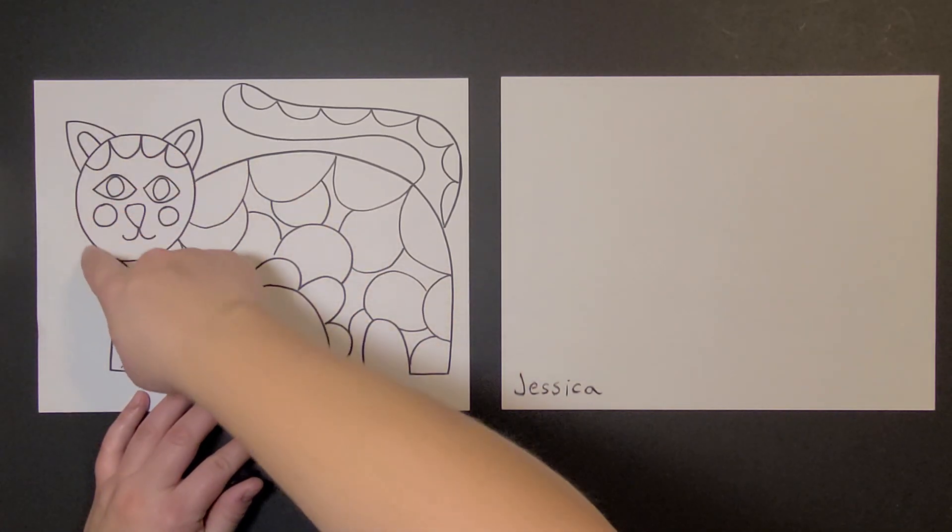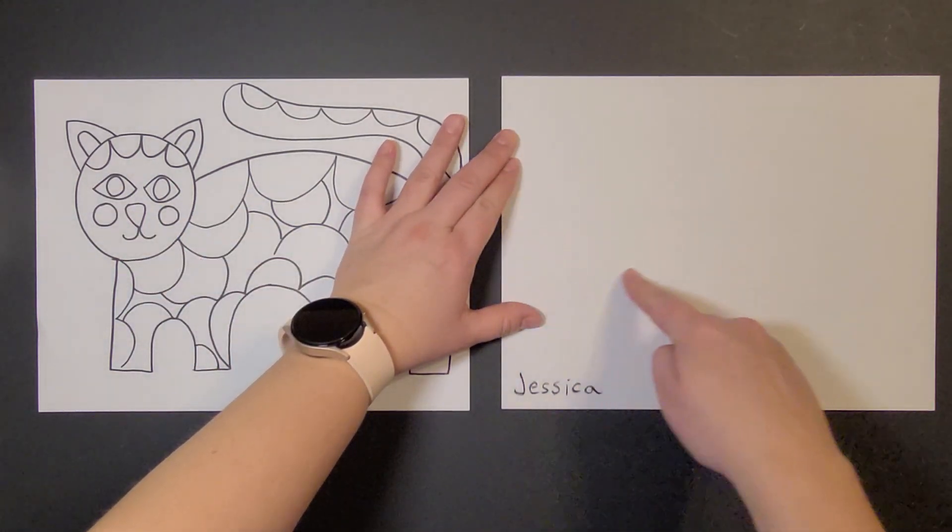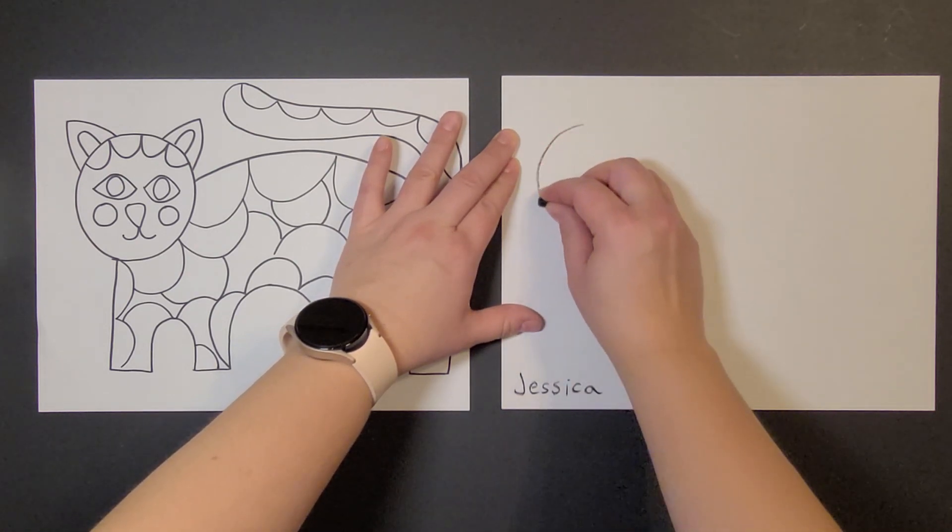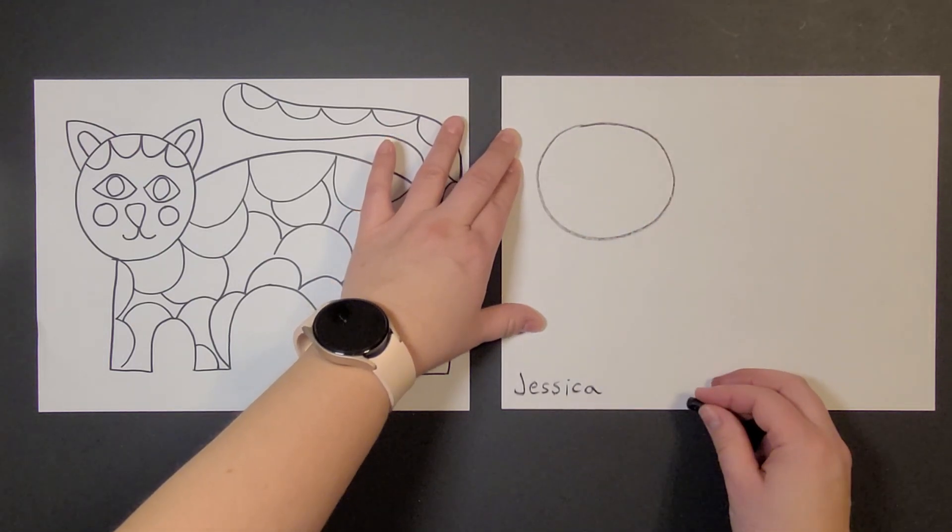Now I'm gonna do the face first. I'm gonna do this circle right here, about this big. I can use my finger to do a practice circle and then when I feel good about that I can draw with my crayon. I have that circle in there.